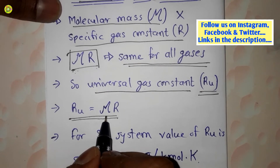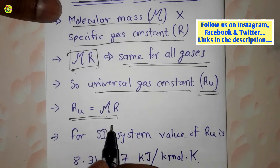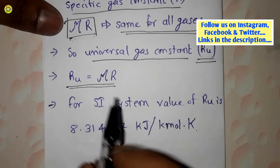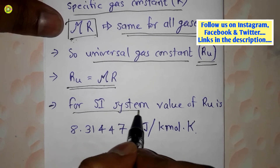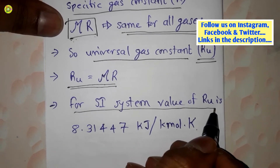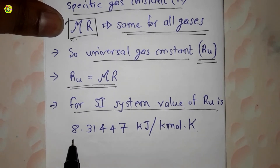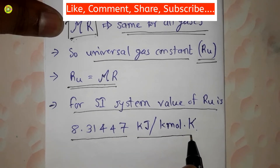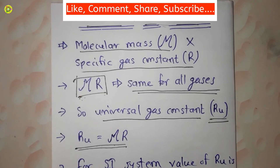The universal gas constant equals the product of molecular mass and specific gas constant. For the SI system, the value of Rᵤ is 8.31447 kilo joule per kilo mole Kelvin. In this video we have studied about the universal gas constant.